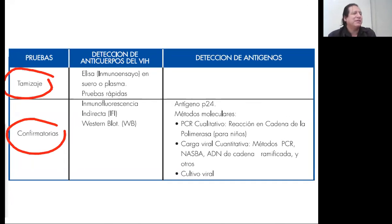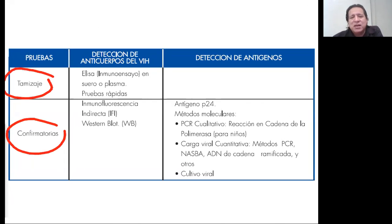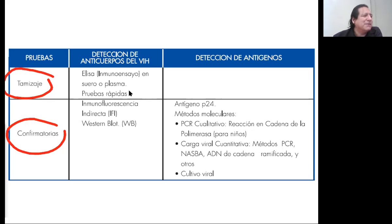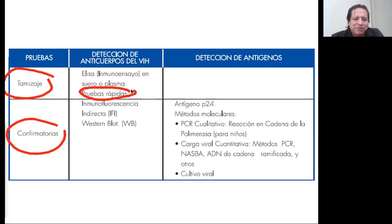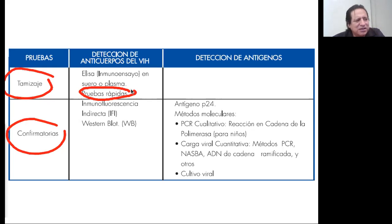Entre las que son de tamizaje: el tamizaje se usa para descartar en los pacientes que tienen sospecha. En otras palabras, las primeras pruebas que hacemos, porque son de bajo costo, para ir detectando casos probables y luego hacerles una prueba confirmatoria. Entre estas tenemos las pruebas rápidas, que son pruebas de inmunocromatografía — se hacen en taquitos parecidos a los de la prueba de embarazo — donde si sale una rayita es negativo, si aparecen dos o tres rayitas es positivo.